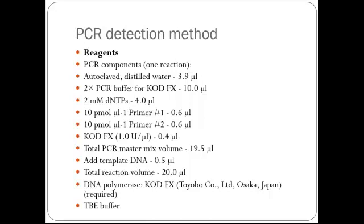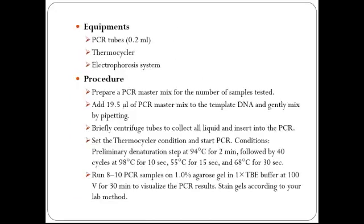Procedure: Prepare a PCR master mix for the number of samples tested. Add 19.5 µl of PCR master mix to the template DNA and gently mix by pipetting. Briefly centrifuge tubes to collect all liquid and insert into the PCR thermocycler. Set the thermal cycle conditions: preliminary denaturation at 94°C for 2 minutes, followed by 40 cycles of 98°C for 10 seconds, 55°C for 15 seconds, and 68°C for 30 seconds.